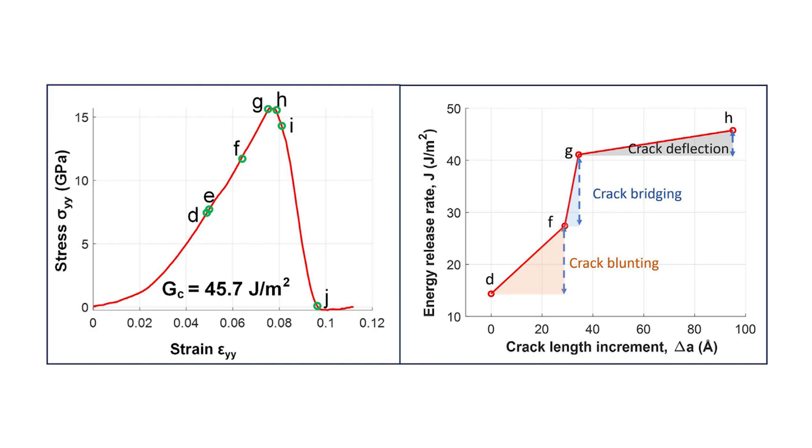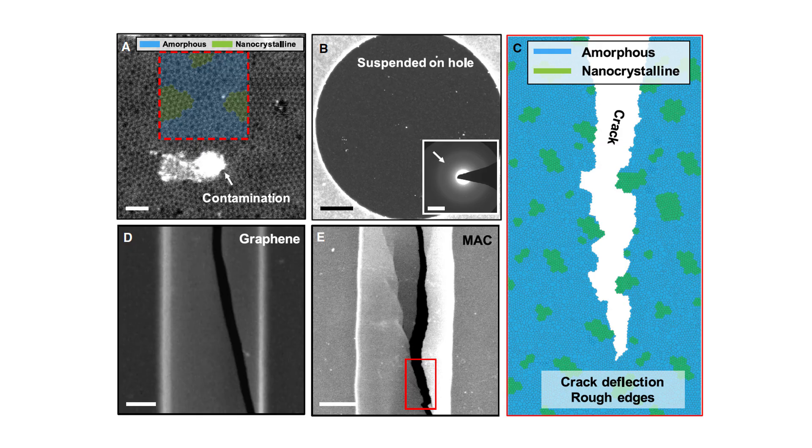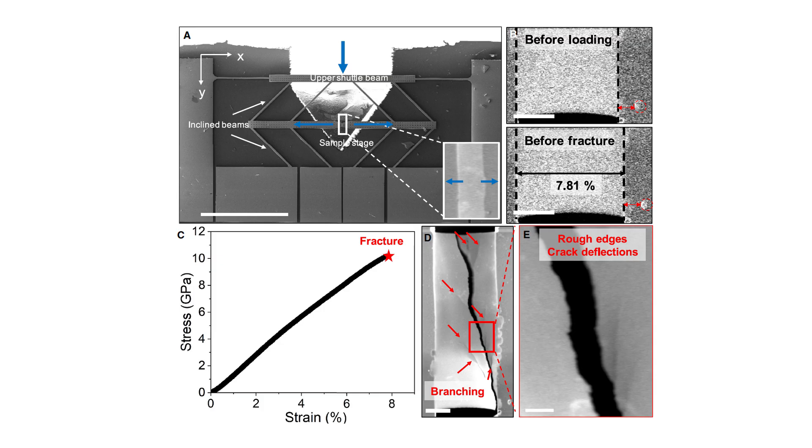Another point they emphasize is the possibility that the fraction of those tiny crystalline islands can shift depending on growth conditions. This means you can push it more toward purely amorphous or incorporate more crystalline bits, and each variation changes the mechanical outcome. Magical, if you think about it. Very magical indeed.